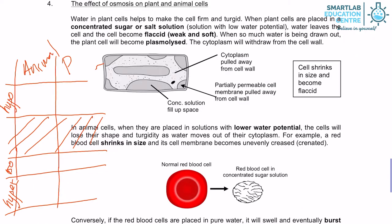So let's take a look at the definition of hypotonic as opposed to iso and hyper. If you remember hyper, sometimes parents will refer to their children — 'Oh, my child is hyper.' So what does hyper mean? Very high. Hypo is the opposite, very low. Iso means equal.